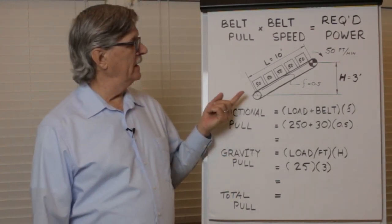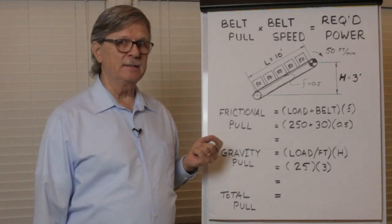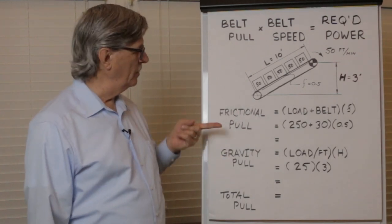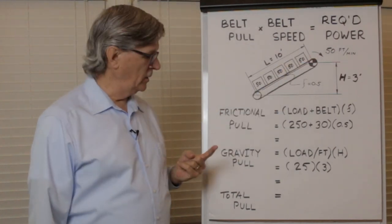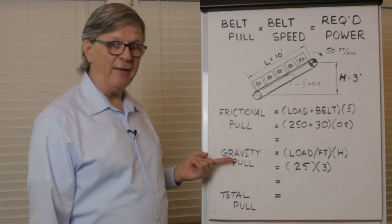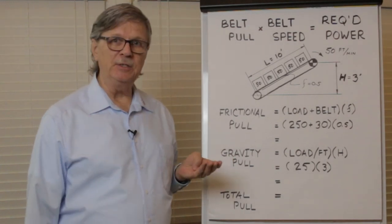Belt pull on an inclined plane conveyor consists of two main components. One component is the pull required to overcome friction and the other pull component is the one required to overcome gravity. We'll take each in turn.